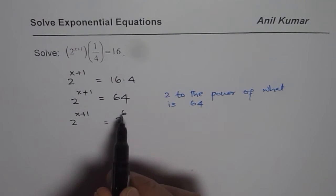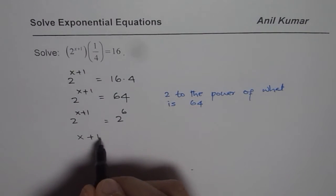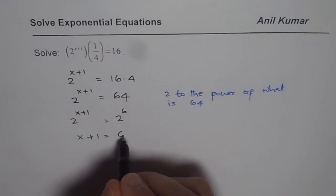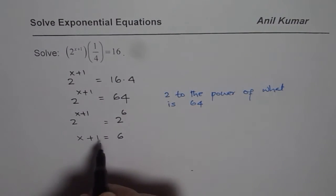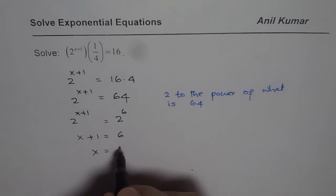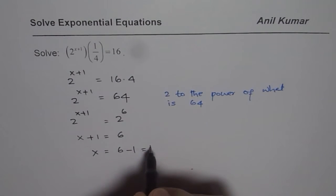So now you equate the exponents. We get x plus 1 equals 6. So equate the exponents. Now solve for x. So x equals 6 minus 1 and that is 5. That is how you should be solving your equation.